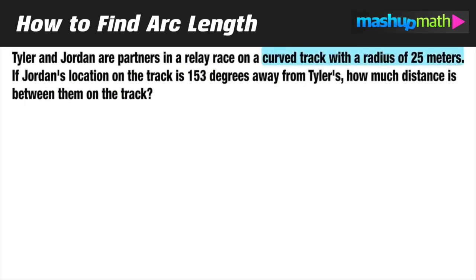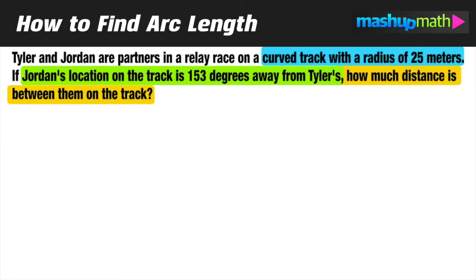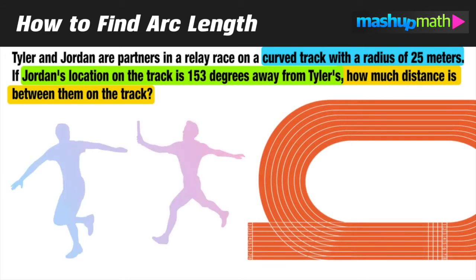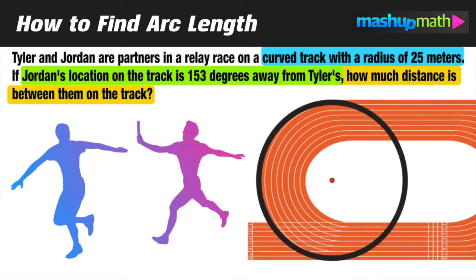Jordan and Tyler are teammates and partners on a relay race, running on a curved track with a radius of 25 meters. We also know that Jordan's location is 153 degrees away from Tyler's. What we want to find is the distance on the track between the two runners. Let's go ahead and visualize that curved racetrack — since they're in a relay race, they're spread apart at different locations on the track and have to meet each other to pass off a baton.